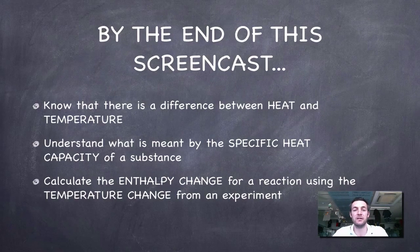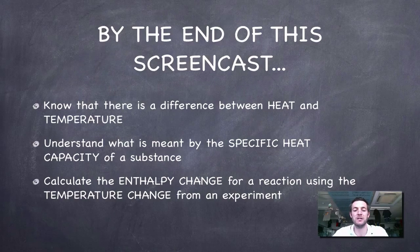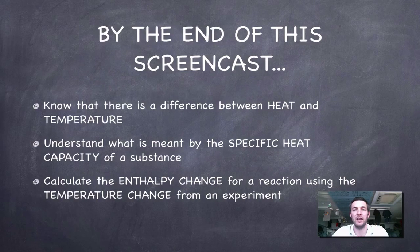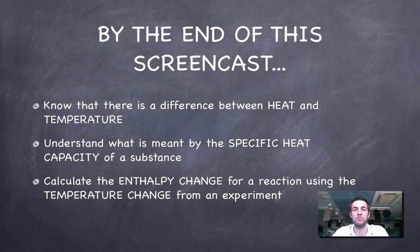Remember that what we were trying to do in this film was to understand that there's a difference between heat and temperature, and that we can turn temperature changes into heat changes by using a quantity known as the specific heat capacity of a substance. At the end we calculated an enthalpy change using a temperature change — we equate the heat change with the enthalpy change because we assume any change in enthalpy results in a change in heat energy. Any questions or comments, please feel free to ask or post a comment on YouTube.